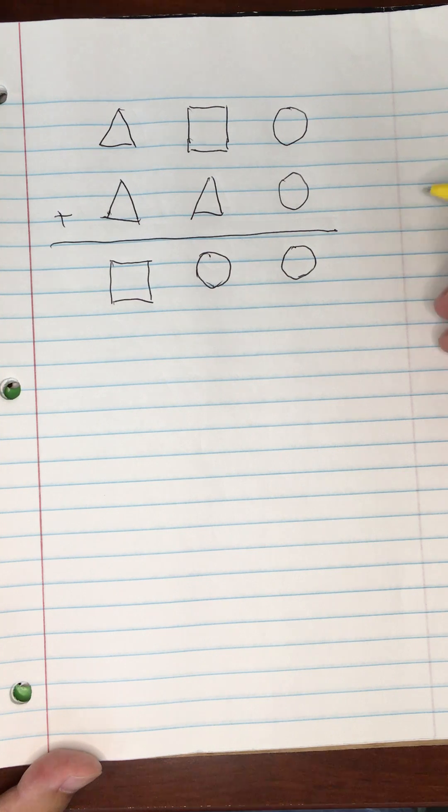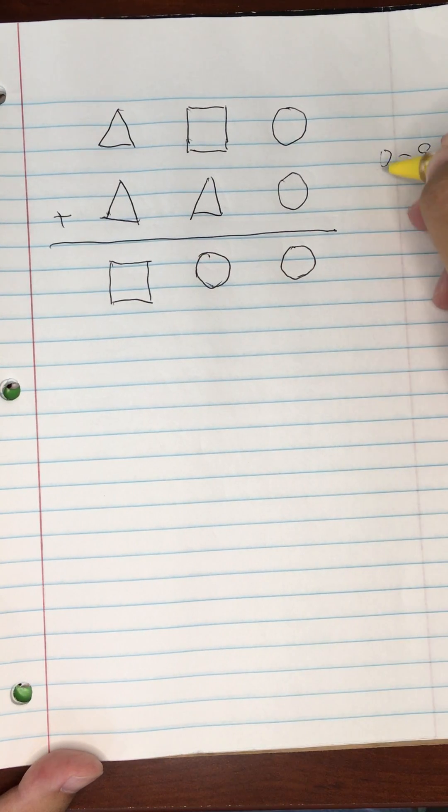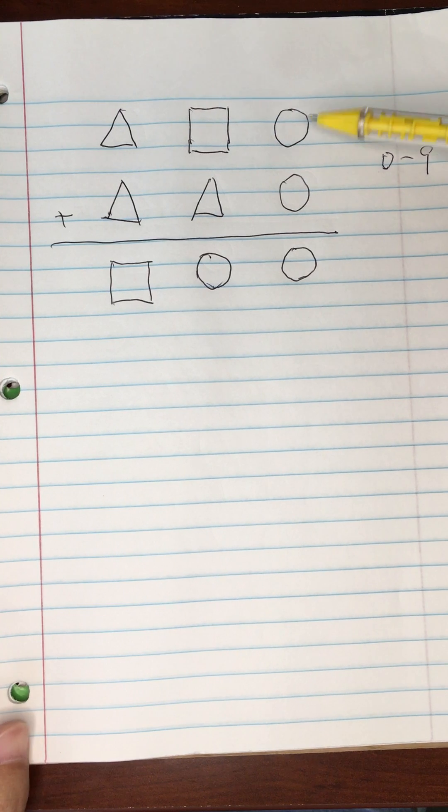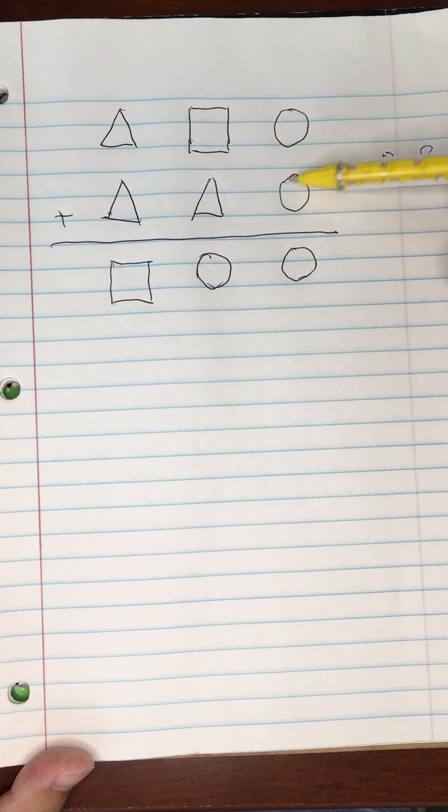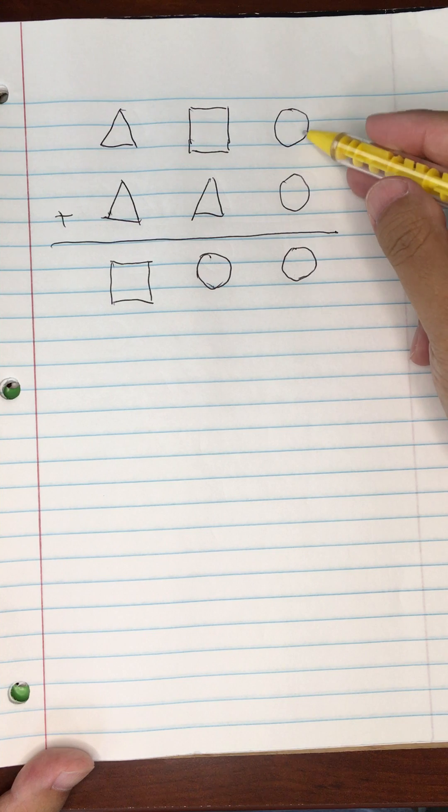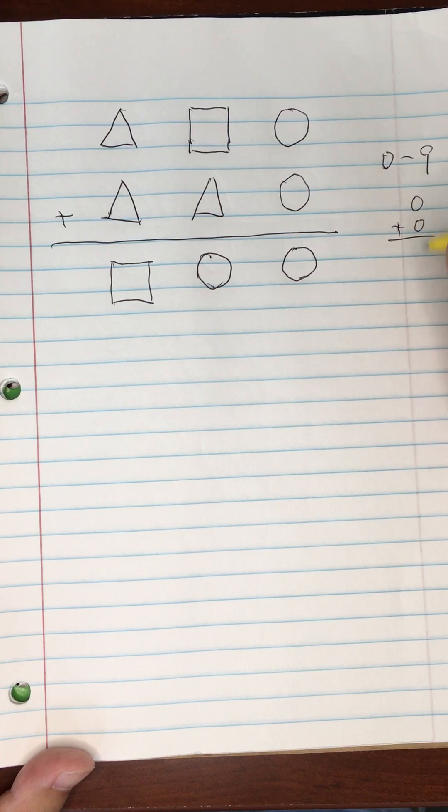We only have 10 digits from zero to nine. What kind of single digit number is going to give us this property where circle plus circle equals another circle? The only digit that has this kind of property is actually zero.